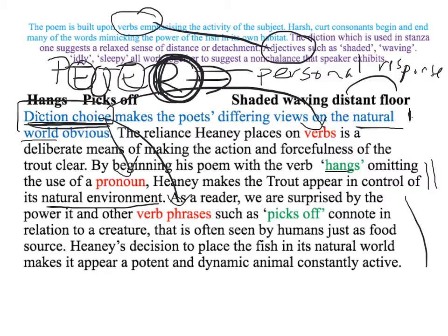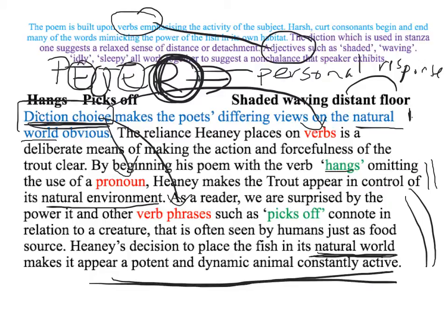This is my beautiful bit of reader response, which also brings in a little analysis and lets the examiner know I truly understand this poem. 'As a reader, we are surprised by the power it, and other verb phrases such as picks off, connote in relation to a creature that is often seen by humans just as a food source. Heaney's decision to place the fish in its natural world makes it appear a potent and dynamic fish, constantly active.' Lovely reader response in relation to what the technique is doing - my examiner is practically doing a handstand with happiness. But I'm not finished yet, because now I have to think about AO3 and connect it to Hardy.